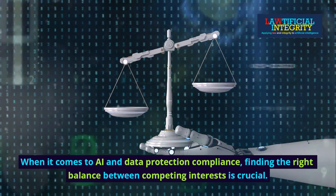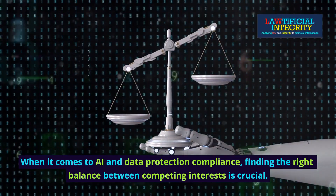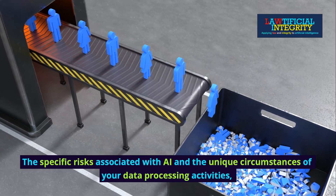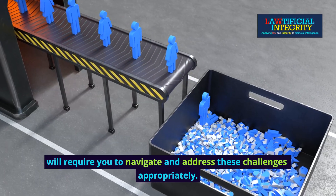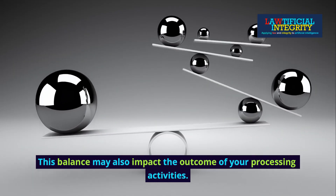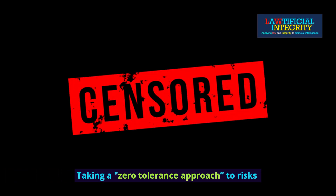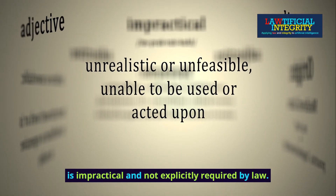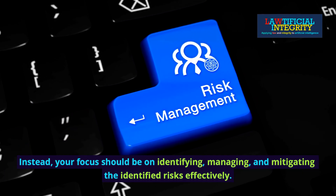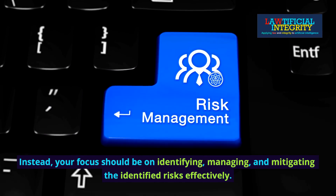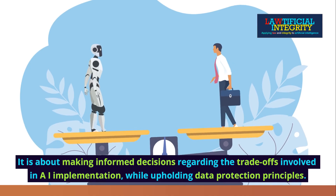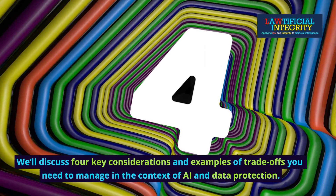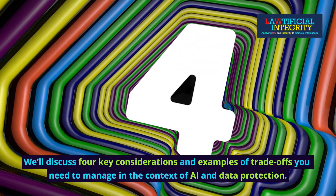When it comes to AI and data protection compliance, finding the right balance between competing interests is crucial. The specific risks associated with AI and the unique circumstances of your data processing activities will require you to navigate and address these challenges appropriately. Taking a zero-tolerance approach to risks that could potentially impact people's rights and freedoms is impractical and not explicitly required by law. Instead, your focus should be on identifying, managing, and mitigating the identified risks effectively. It is about making informed decisions regarding the trade-offs involved in AI implementation while upholding data protection principles. We'll discuss four key considerations and examples of trade-offs you need to manage in the context of AI and data protection.